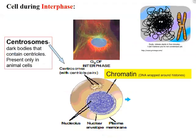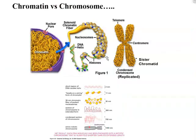During interphase, if we focus on the DNA content, we see that DNA is organized in the form of chromatin. Right before cell division, chromatin condenses into chromosomes. At this point, the chromosomes are replicated — they are made up of two sister chromatids attached at the centromere. It is much easier to separate sister chromatids than chromatin; separating chromatin would likely result in loss of genetic information.